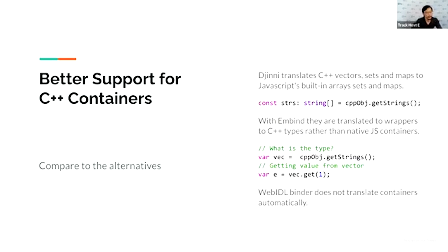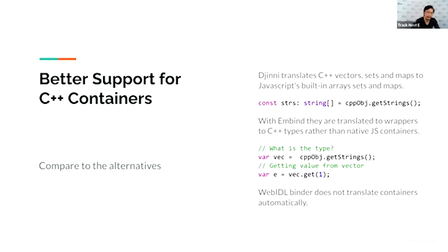We have better support for C++ containers. Genie translates C++ vectors, sets, and maps to JavaScript's built-in arrays, sets, and maps. So when you call the Genie interface, you get a list of strings that is very natural. With EMBind, they get translated into an object that wraps a C++ vector, which is less easy to use — you get a wrapper of the C++ std::vector instead of a JavaScript array, and you have to call methods to retrieve elements one by one.